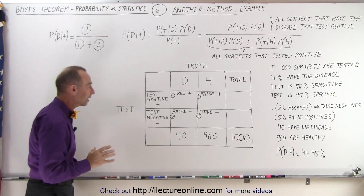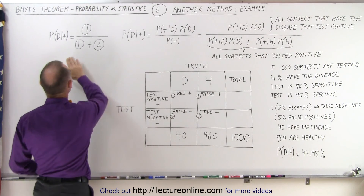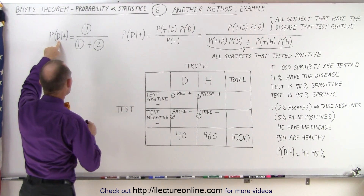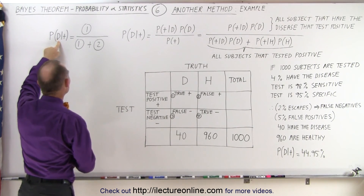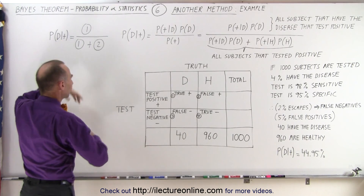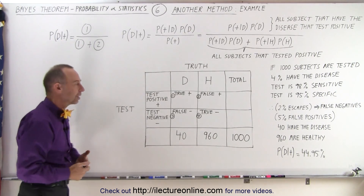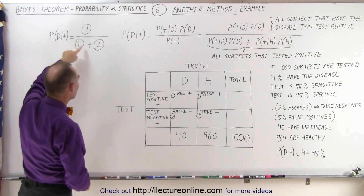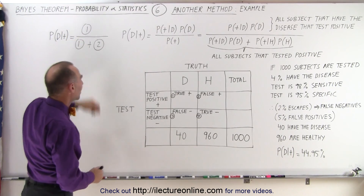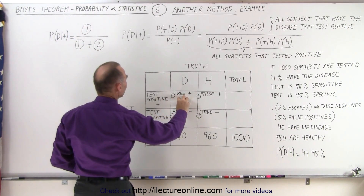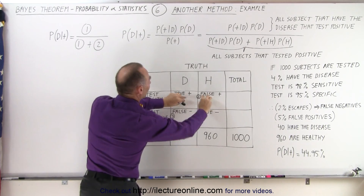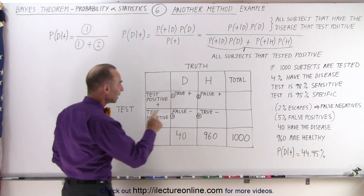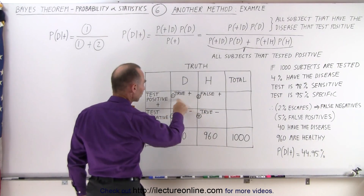We realize from the last video that we can find the probability that someone actually does have the disease when they test positive. That's going to be a probability somewhere between zero and 100%, and we can calculate it using this equation — the value in the top box divided by the sum of the two boxes. So how do we calculate what goes in here?